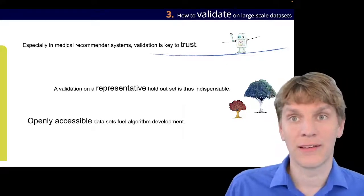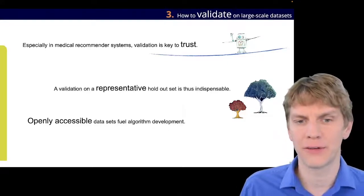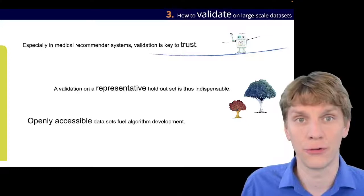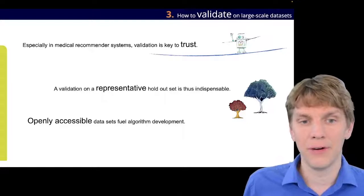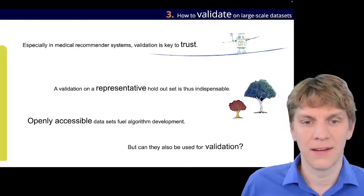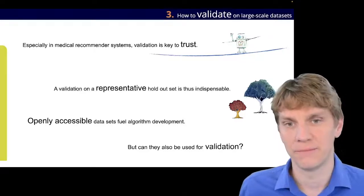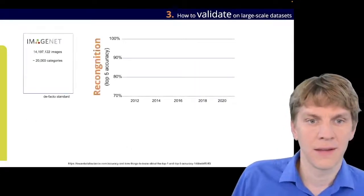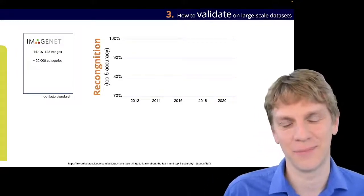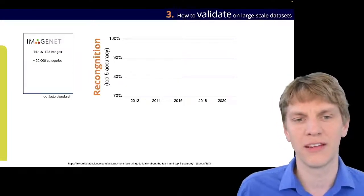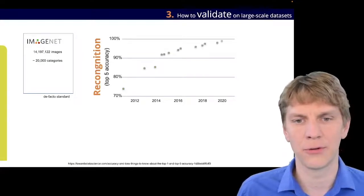So, we know that having openly accessible datasets really fueled algorithm development. This is true for ImageNet. This is also true for many biomedical tasks. However, this also means that these have to be dealt with a lot of caution when used for validation. Now, let's have a look again back to our ImageNet dataset.